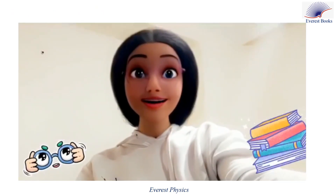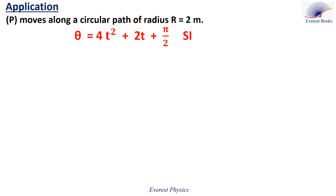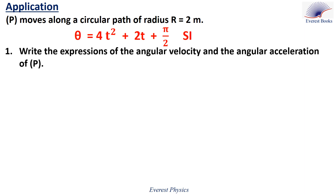Focus, please — this is important. Let's solve an application. A particle P moves along a circular path of radius 2 meters. Its angular abscissa is given by the expression: 4t² + 2t + π/2, in SI units, which means t is expressed in seconds and theta in radians. Number one: write the expressions of the angular velocity and the angular acceleration of P.